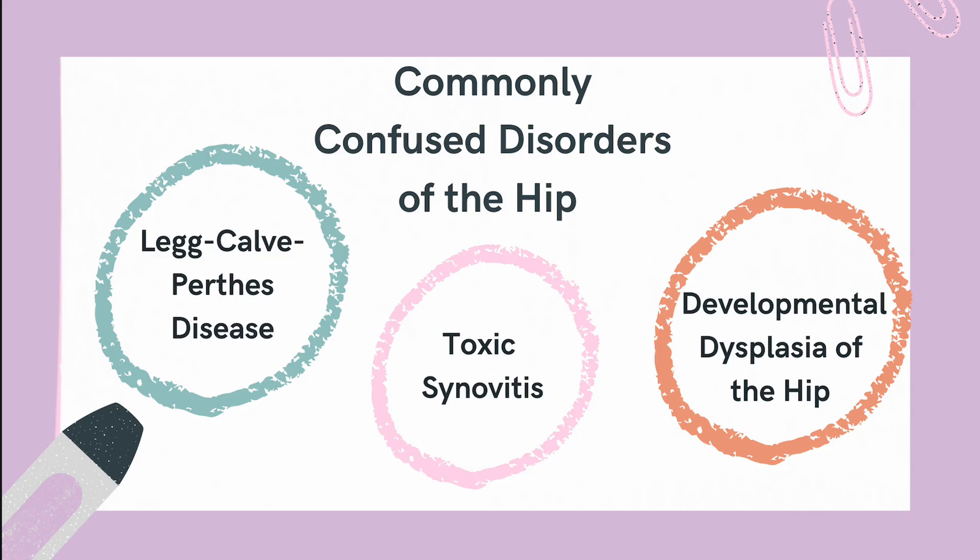Developmental dysplasia of the hip is caused by abnormal hip joint development, often detected during infancy. Risk factors include breech presentation and family history. Screening tests include the Ortolani and Barlow maneuvers, and treatment depends on age. In infants, it may involve a harness or brace to stabilize the hip joint. In older children or adults, treatment may include physical therapy, pain management, and surgical intervention.